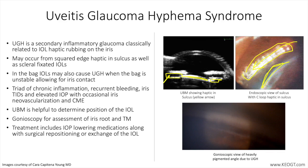Gonioscopy is essential to determine presence of blood that may not be visible without direct view of the angle. The level of angle pigmentation — look for distribution of pigment in all quadrants — and examine meticulously for any possible tumors that may mimic UGH syndrome, should also be noted as seen here in the bottom figure.